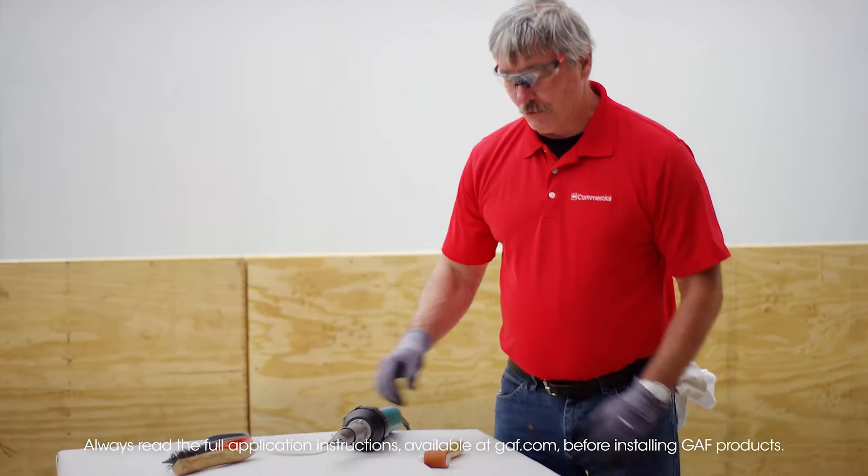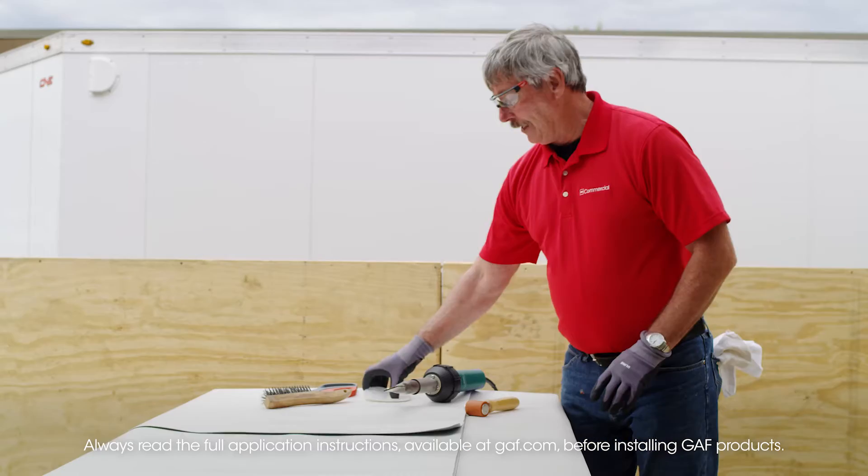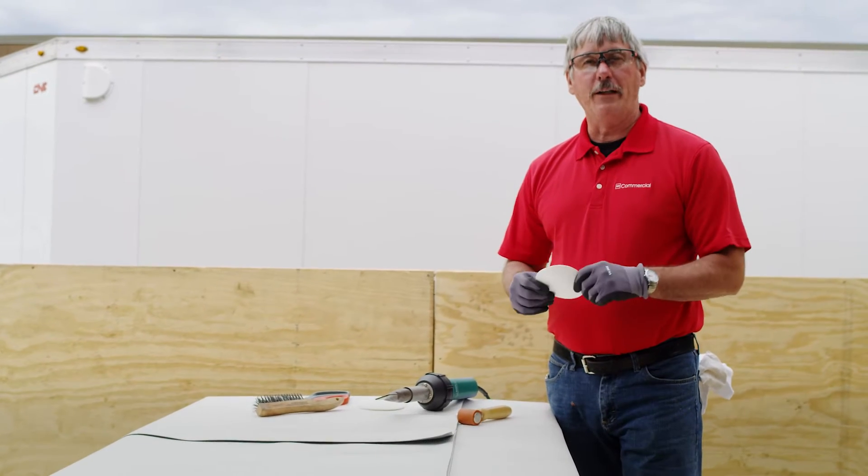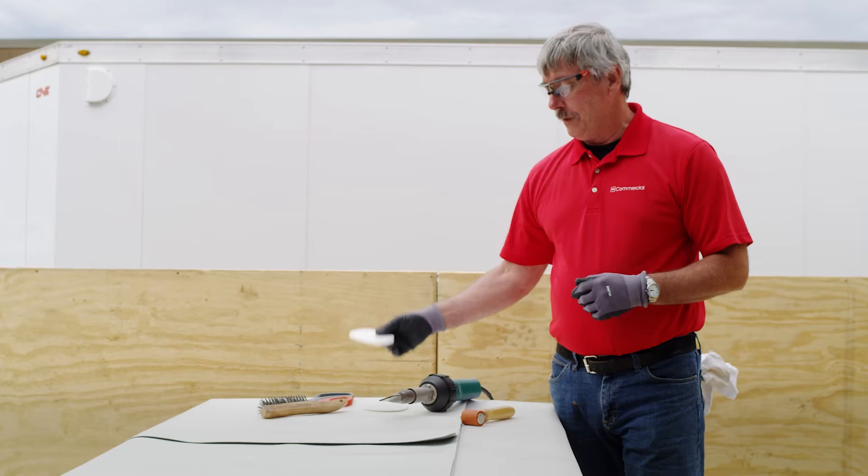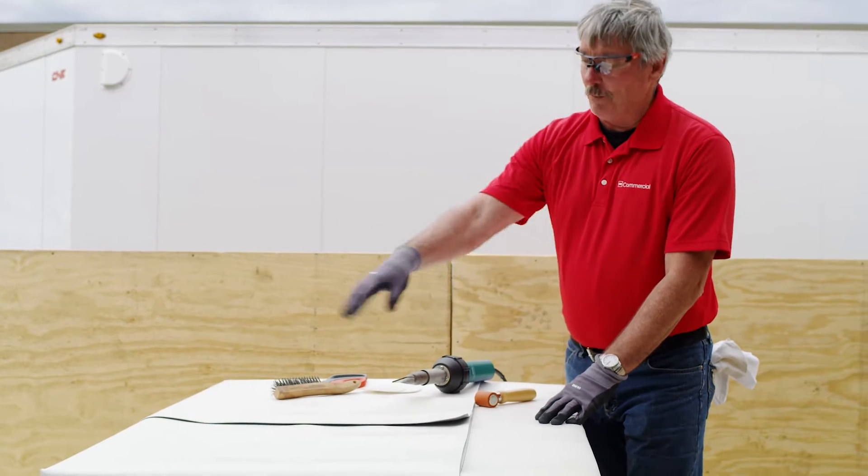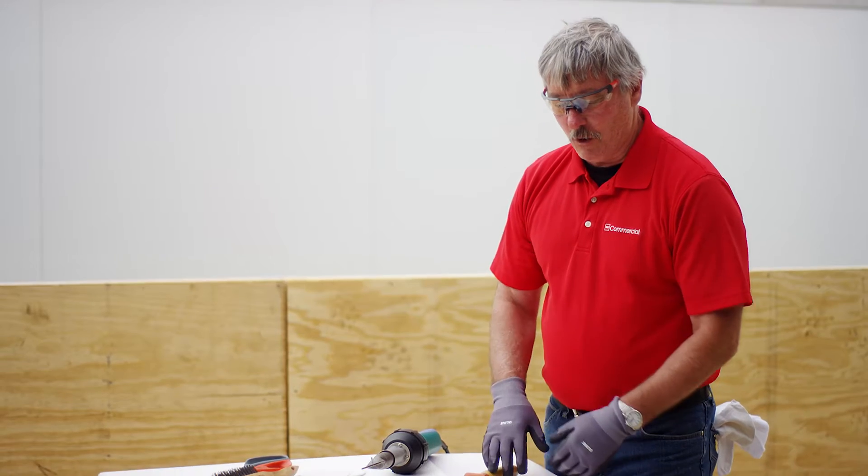So today we're going to go over T-joints. Now we're doing 80 mil PVC. As a manufacturer, this is the only place we require T-joints on 80 mil only. There's several areas on the roof that have a T-joint. This right here would be one of them. We have a butt-end seam. We'd start another roll.